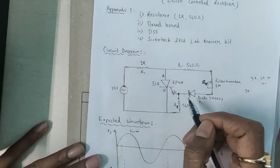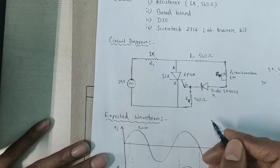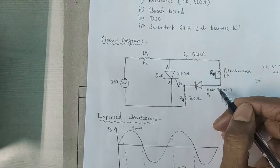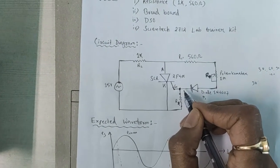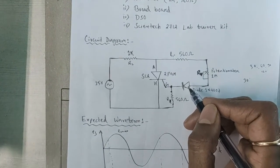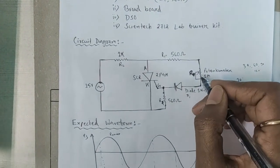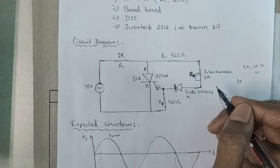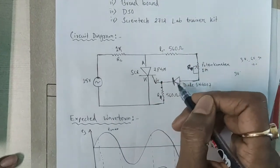If we start increasing the value of RV, then the triggering angle will increase. The current flowing through RV will reduce, meaning the current will not immediately reach the gate terminal of the SCR — it will take some time to turn on the SCR. If we increase the resistance of RV again, it will take more time to reach the gate terminal, and thus more time to turn on the SCR. This is the overall circuit explanation of R triggering.